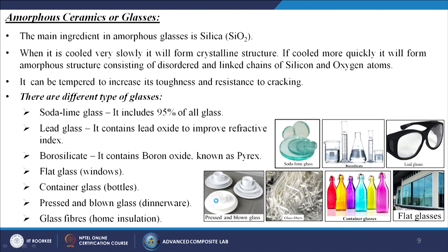The main ingredient in amorphous glasses is silica, SiO₂. When cooled very slowly it forms a crystalline structure; if cooled more quickly it forms an amorphous structure consisting of disordered, linked chains of silicon and oxygen atoms. It can be tempered to increase toughness and resistance to cracking depending on the application — for example, car windshields and high-temperature applications use tempered glass.